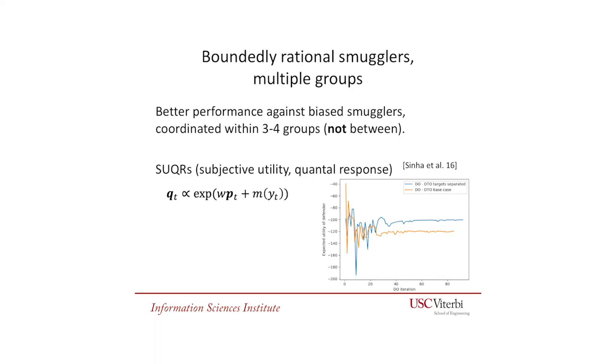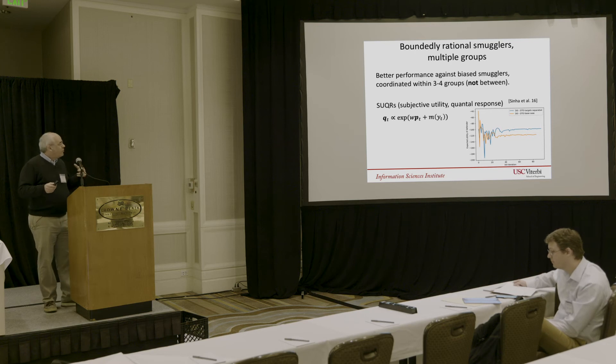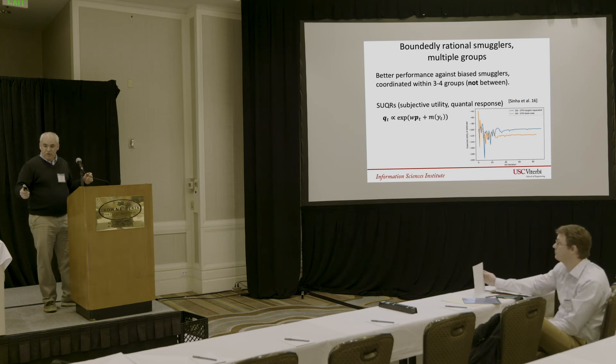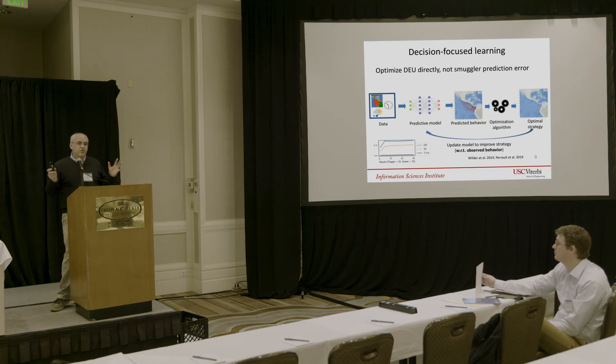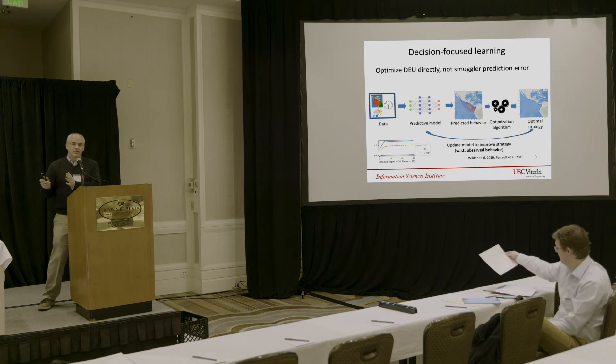We can do even better by noticing that smugglers are not actually behaving as one totally rational unified agent. They're actually a bunch of independent drug trafficking organizations—maybe three or four different groups—that are not coordinating with each other and have idiosyncrasies, for example about the target they want to reach. If we can model that, we can pull out more utility—we can pull more drugs out of the water. This graph shows we can get about 10 to 20% improvement just by modeling that there are about three or four different uncoordinated groups.